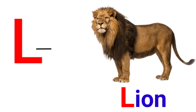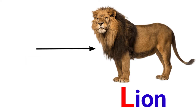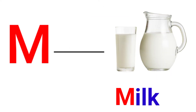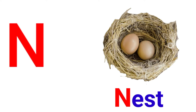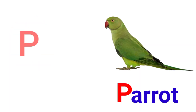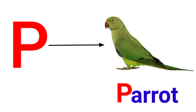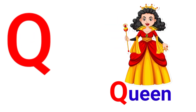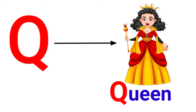L for lion, M for milk, N for nest, O for orange, P for parrot, Q for queen.